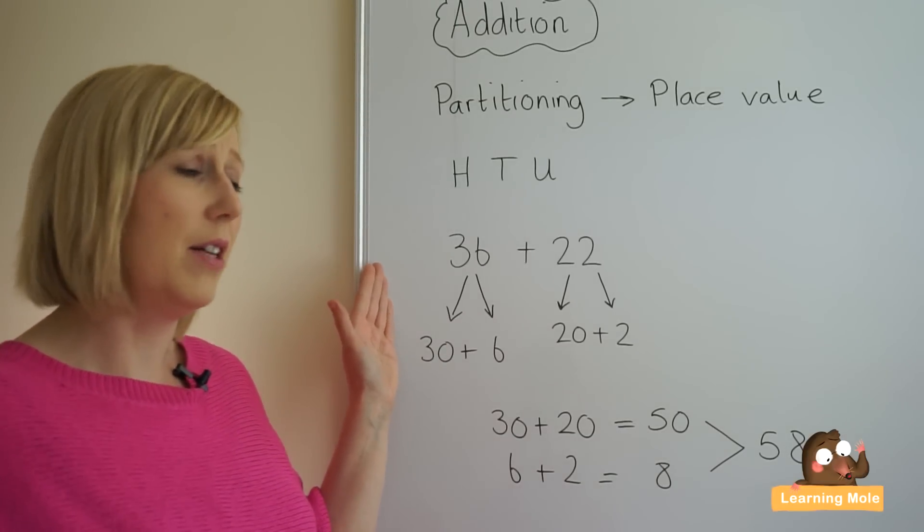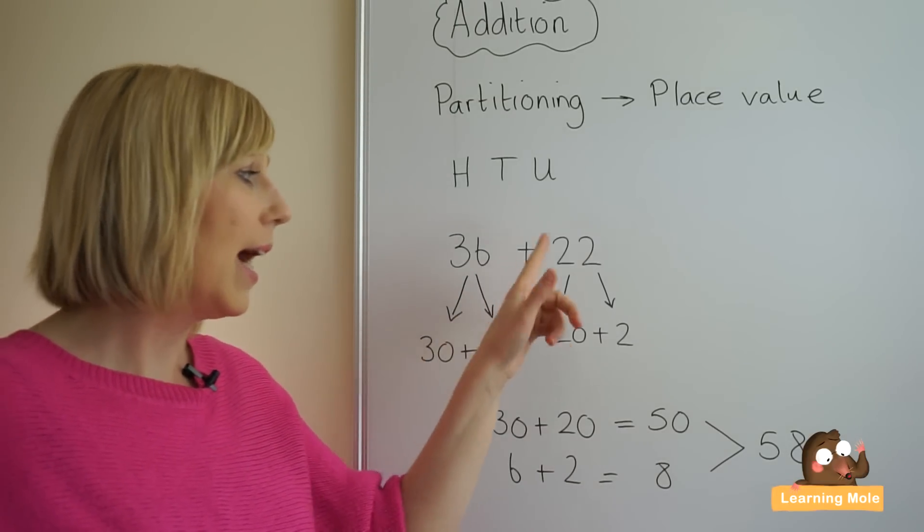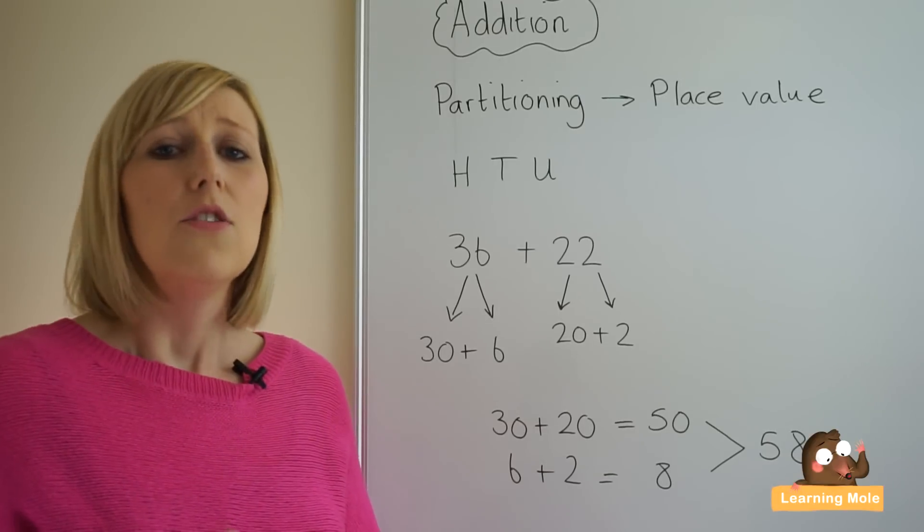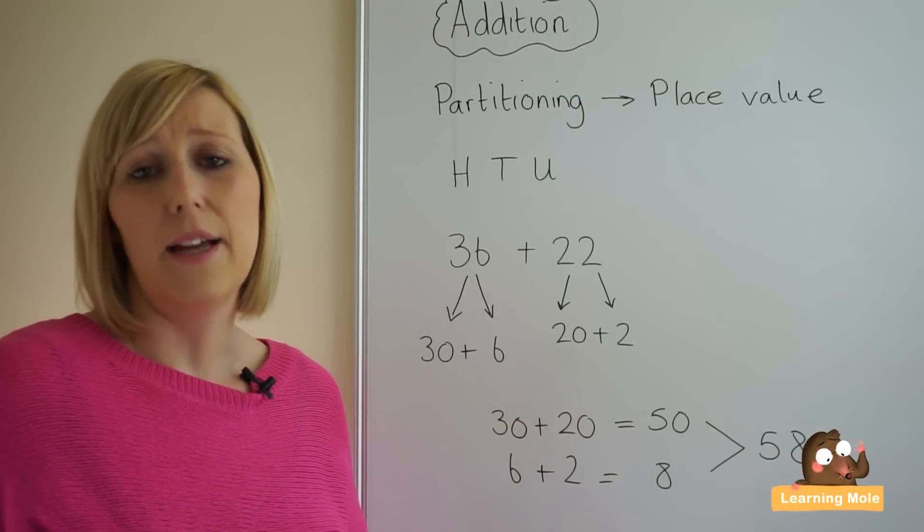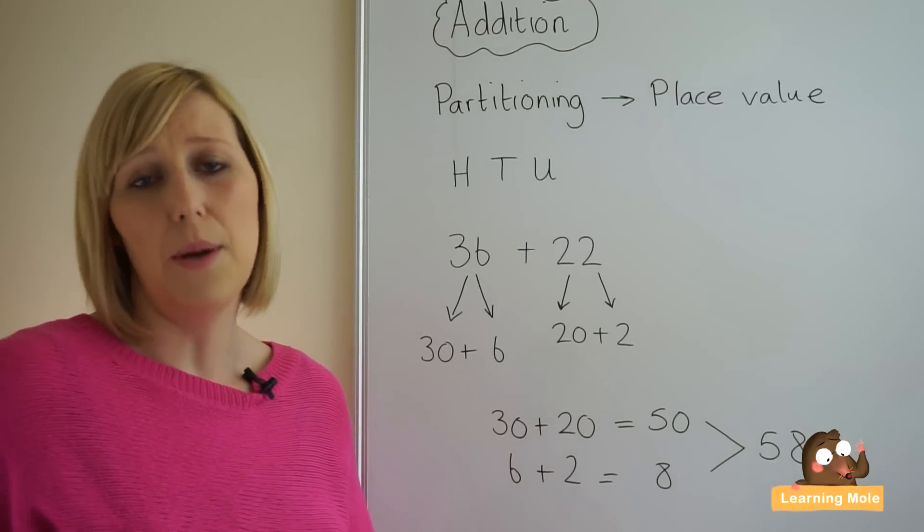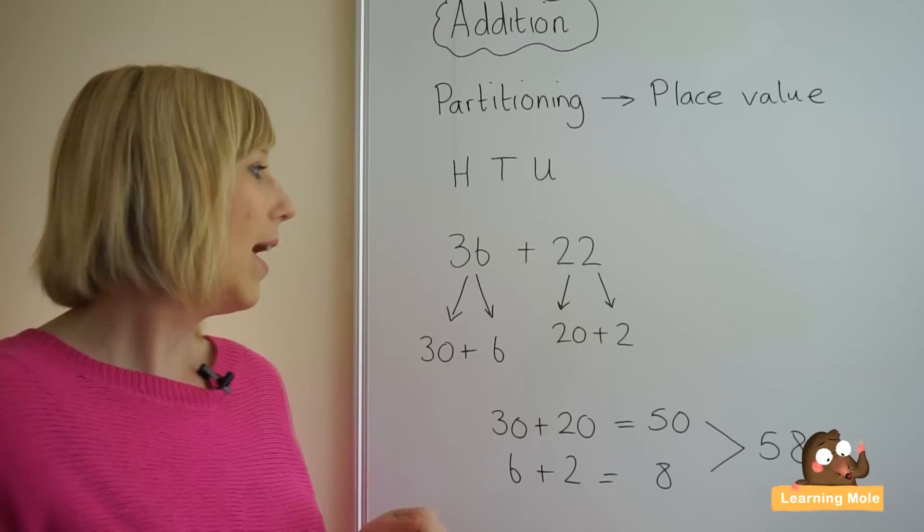So we're going to start with a very basic calculation. We have 36 add 22. Now what we want to do is ask the child to partition those numbers into tens and units. We don't have any hundreds in this number so they don't have to worry about hundreds.